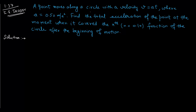A point moves along a circle with velocity v equal to at, where a equals 0.50 meters per second squared. Find the total acceleration of the point at the moment when it has covered the nth fraction of the circle after the beginning of motion. Since velocity is variable, this is a situation of non-uniform circular motion.